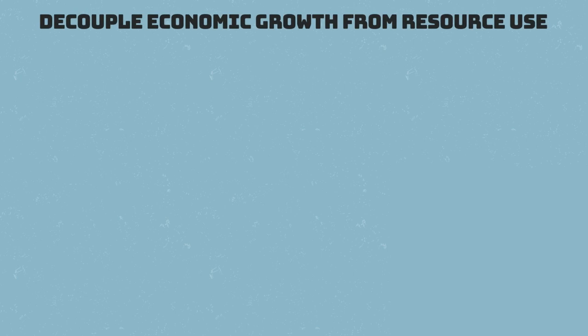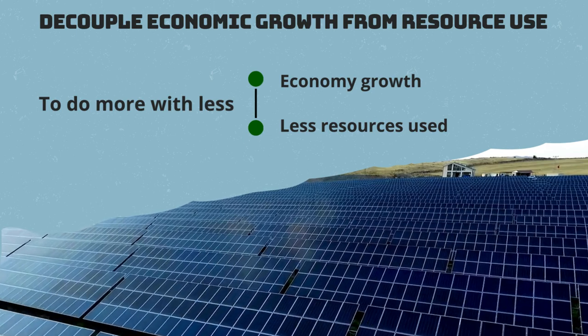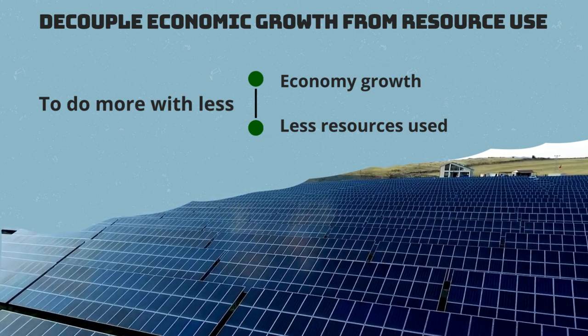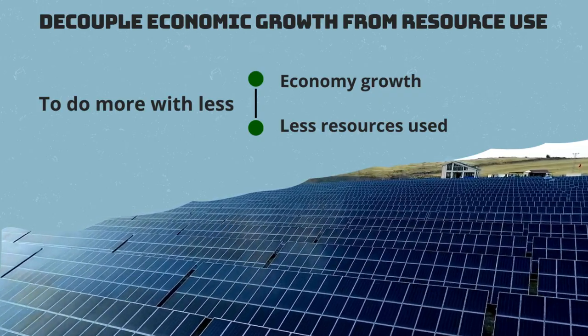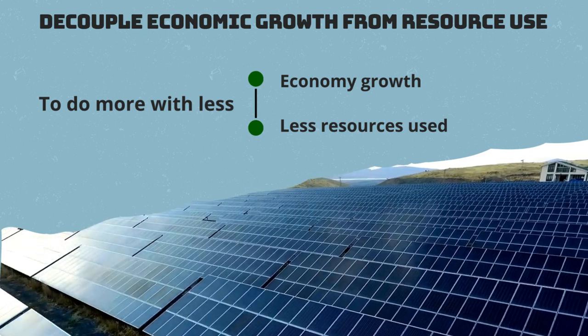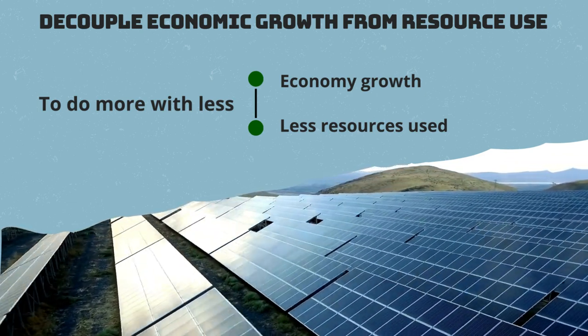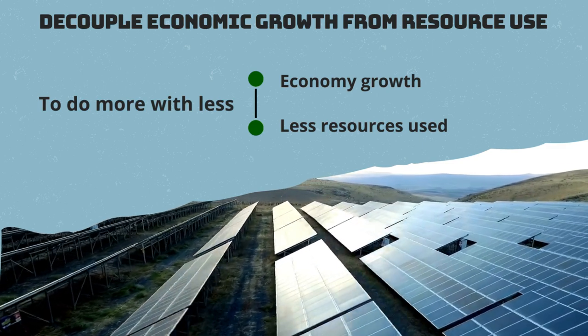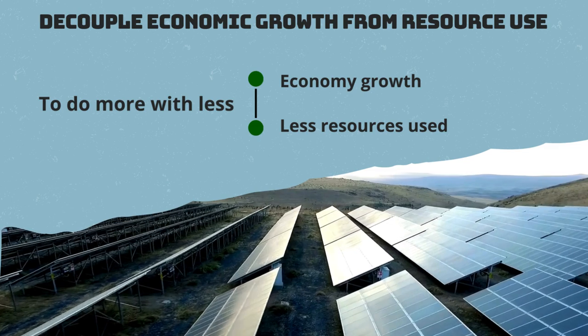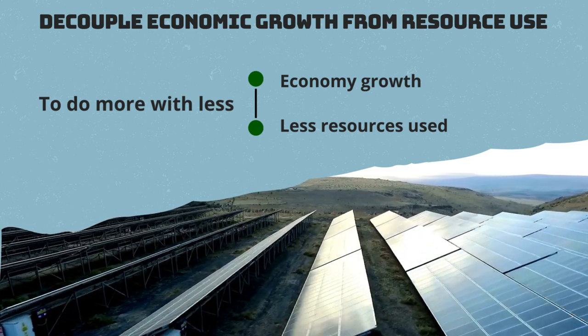The second goal is to decouple the economic growth of the EU from resource use. The EU will have to do more with less — in other words, use resources more efficiently so that the economy grows without the need to use more natural resources. This greater efficiency is also linked to finding more sustainable alternative resources, for example, obtaining electricity from the sun instead of fossil fuels.